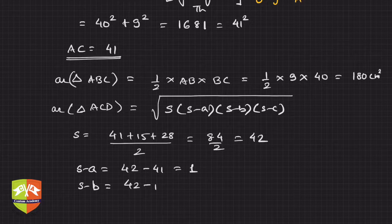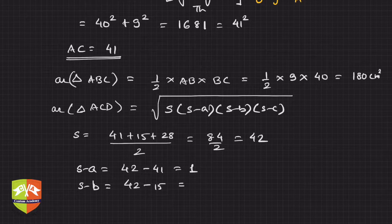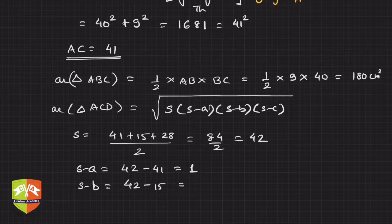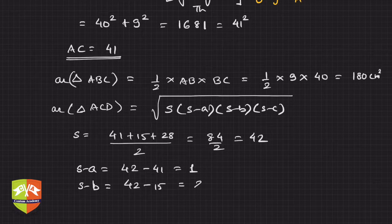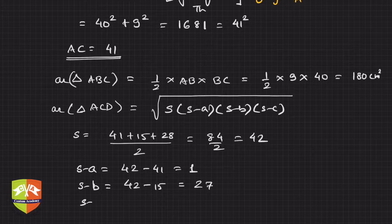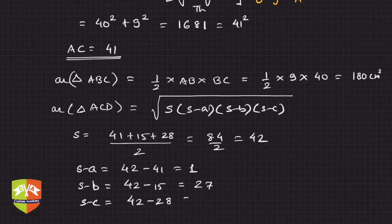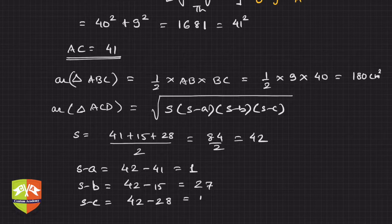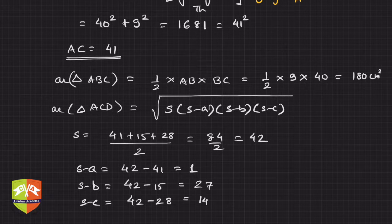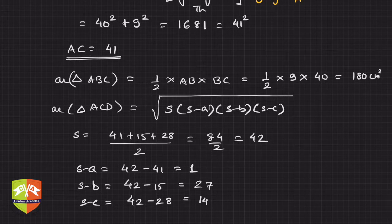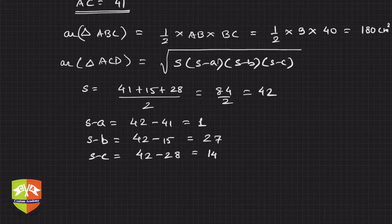And s minus c is 42 minus 28, which is 14. Now let's find the area of triangle ACD: it's the square root of s times (s-a) times (s-b) times (s-c), which is root of 42 times 1 times 27 times 14.